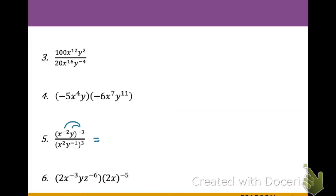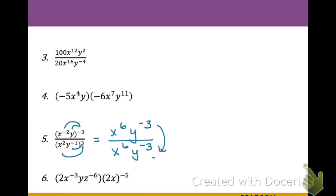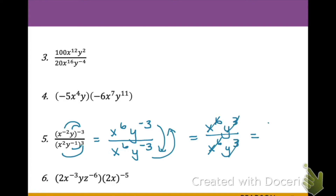In the next example, we distribute negative 3 to both bases on top and positive 3 to those on the bottom. On top we get x to the 6th and y to the negative 3rd; on the bottom, x to the 6th and y to the negative 3rd. After moving negative exponents, we have x to the 6th and y to the 3rd on top, and x to the 6th and y to the 3rd in the denominator. Crossing everything out leaves 1 over 1, which simplifies to 1.